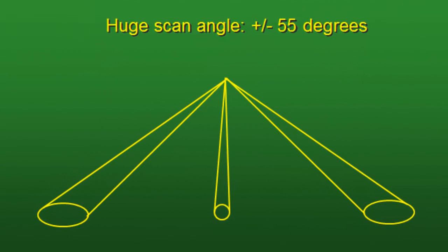To get this large regional coverage, we have a huge scan angle of plus or minus 55 degrees, which creates a variable instantaneous field of view. Directly at nadir below the sensor the field of view is about 1.1 kilometers, but at extreme scan angles it becomes oblong and very large. The data is typically resampled to square pixels, but the instantaneous field of view from the original swath varies considerably.